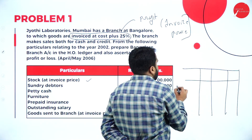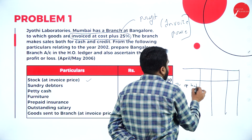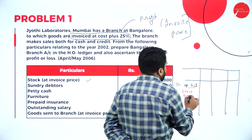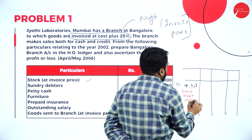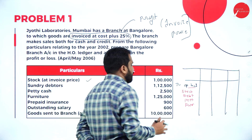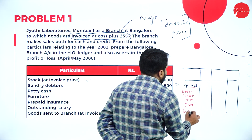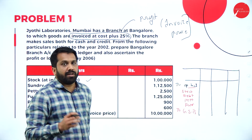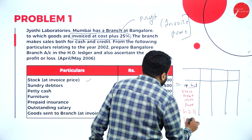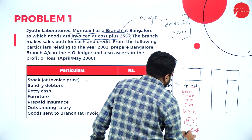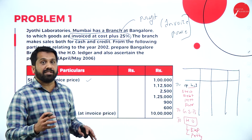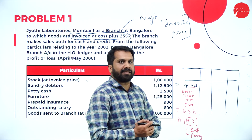Now for the branch stock account format: on the debit side, we have opening balances — stock, debtors, petty cash, furniture — all opening balances. Next comes goods sent to branch (GSB), then any head office expenses paid, and any petty cash paid to the branch. These are the items that come under the debit side of the branch stock account.